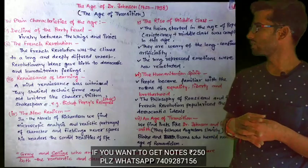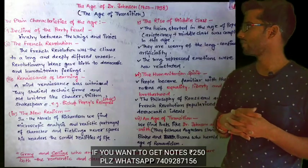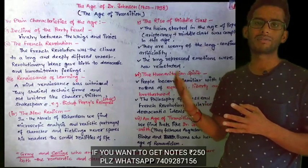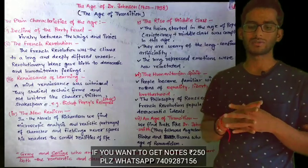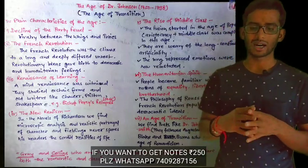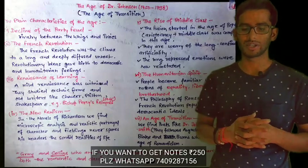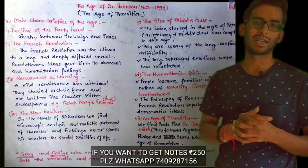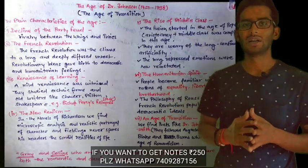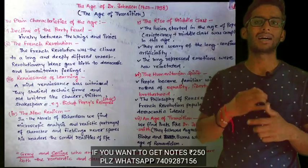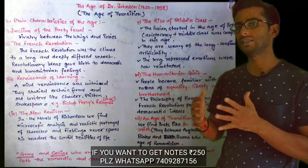The third characteristic is the Renaissance of Learning. This was also influenced by the French Revolution. A mild renaissance was witnessed as writers studied archaic forms and old writers like Chaucer, Milton, and Shakespeare. An example is Bishop Percy's 'Relics' in 1765, showing renewed interest in archaic forms of literature.